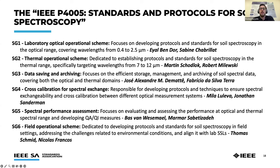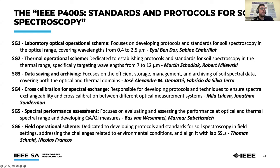The working group is divided into six subgroups: the Laboratory Optical Operational Scheme; the Thermal Operational Scheme, currently paused as we focus on NIR and visible parts of the electromagnetic spectrum; Subgroup 3, focused on data saving and archiving, providing guidelines on how to effectively store and manage spectral measurements; a working group for cross-calibration for spectral exchange, responsible for developing protocols to ensure spectral exchangeability between different optical measurement systems; Subgroup 5 on spectral performance assessment; and Subgroup 6, the Field Operational Scheme, which aims to transfer laboratory guidelines to the field.